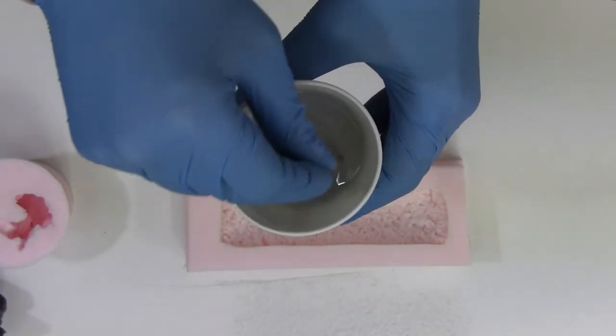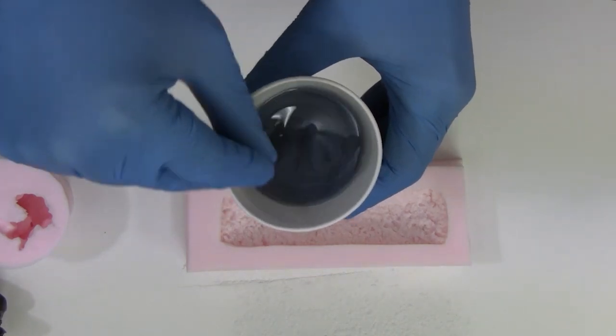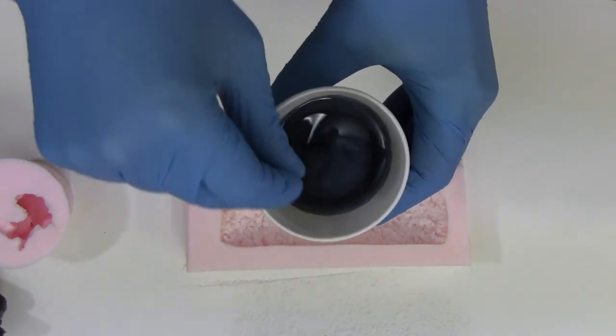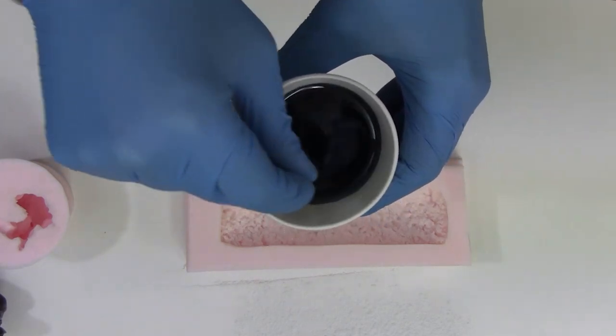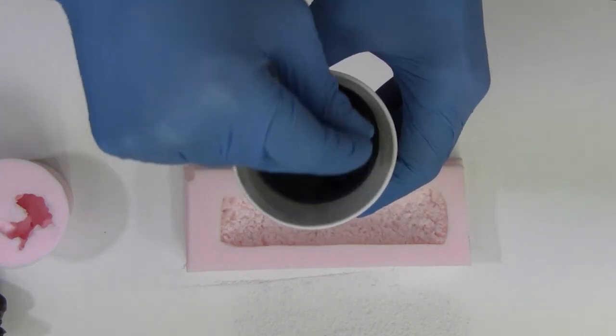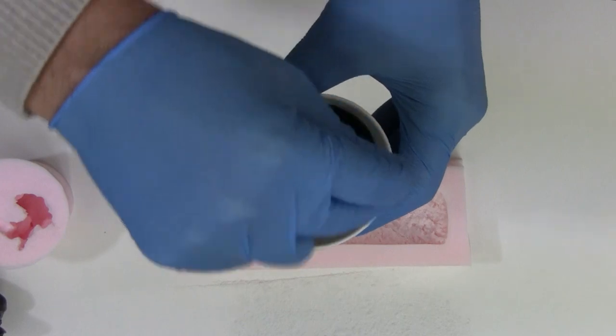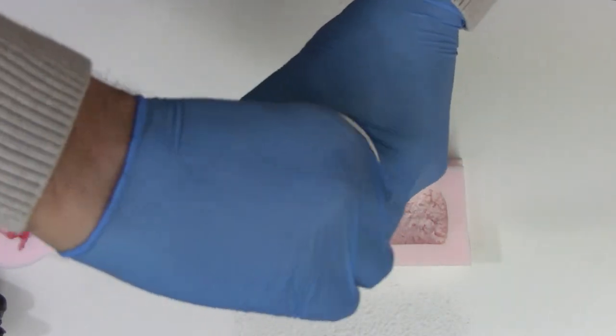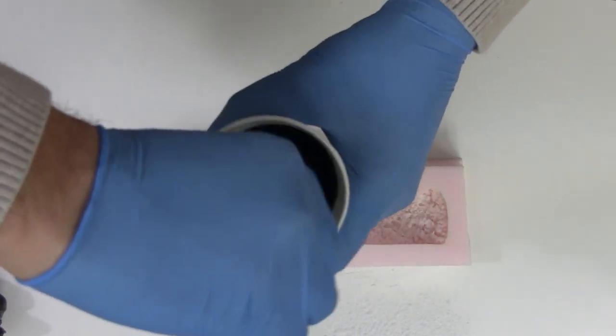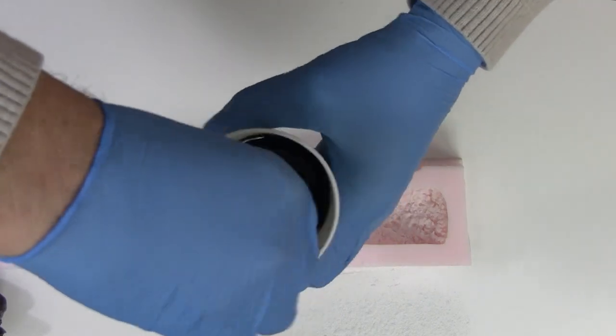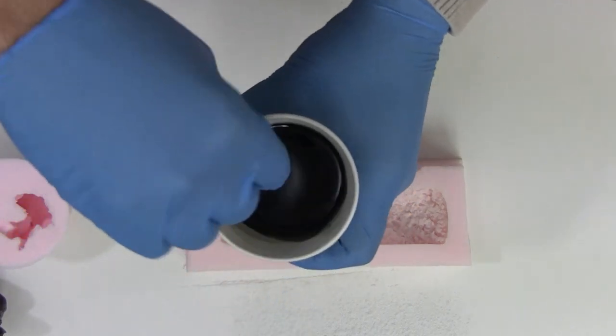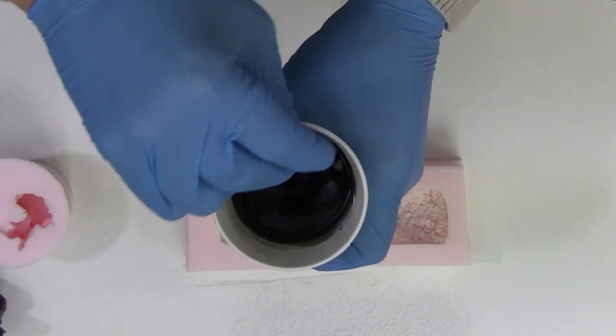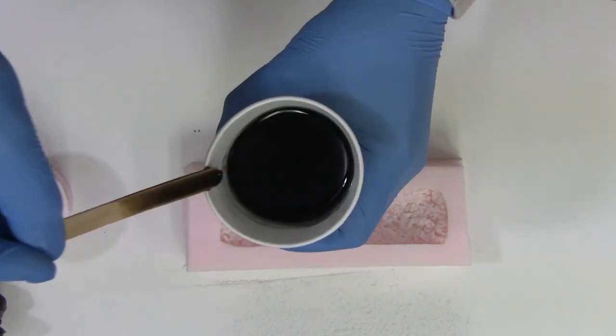When mixing a resin, you want to mix it nice and slowly because the faster you mix, the more air you can build into your resin. So you want to minimize that by just stirring slowly, not real briskly. Mix thoroughly though, making sure to scrape the sides of your cup, the bottom of the container, and your stick.